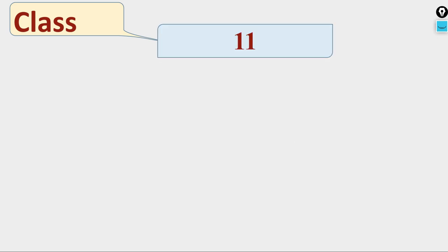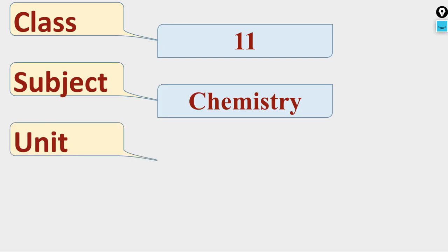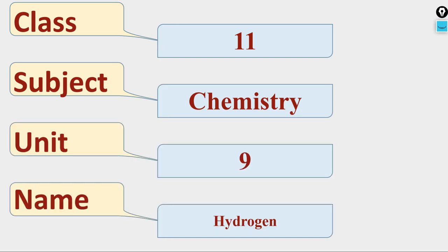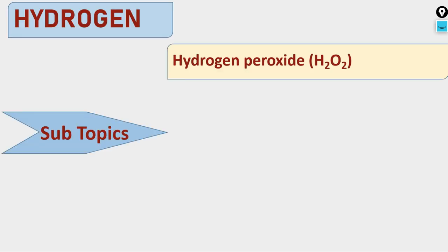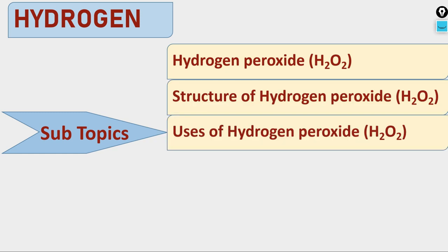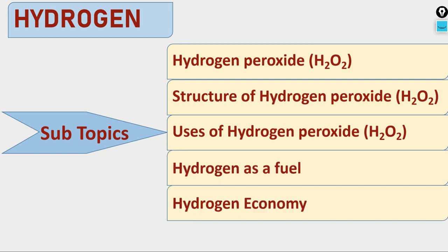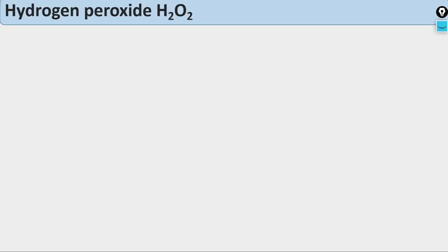Dear students, I welcome you all for my fifth lecture under Har Ghar Paathshala for class 11th subject chemistry, unit 9th. The name of the unit is hydrogen. Today's subtopics are hydrogen peroxide, structure of hydrogen peroxide, uses of hydrogen peroxide, and hydrogen as a fuel or hydrogen economy. Let us begin with our first subtopic, hydrogen peroxide.